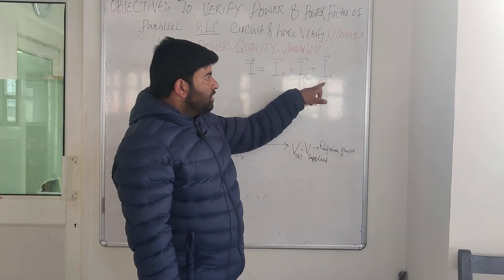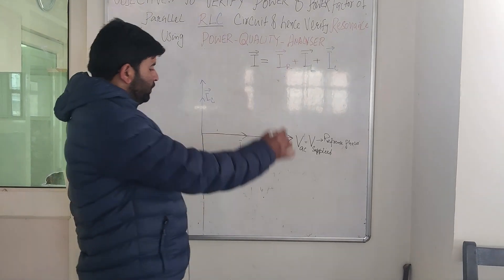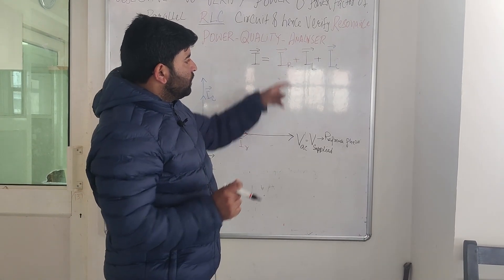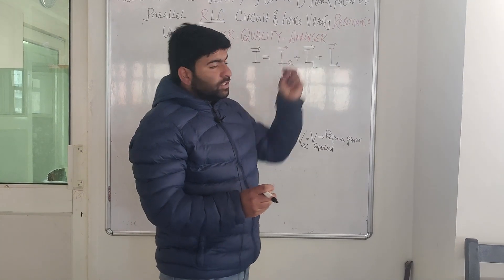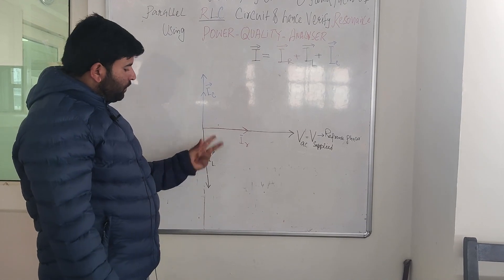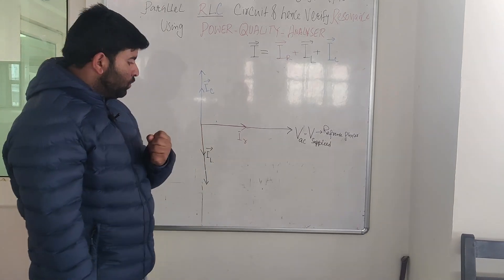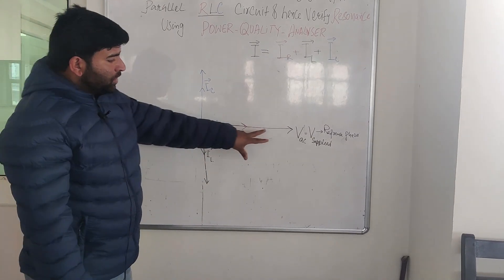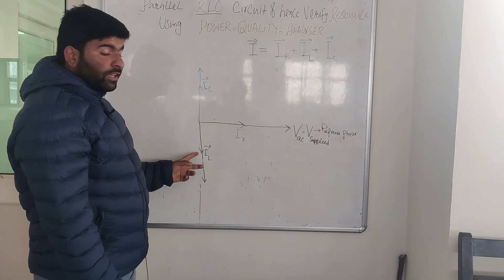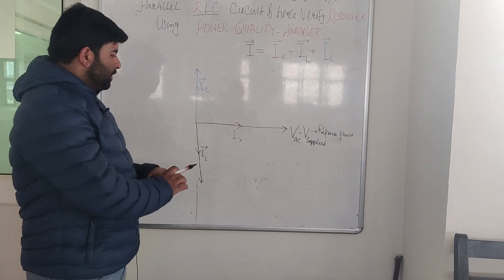The input current I drawn from the source is the phasor sum of IR, IL, and IC — the resistive, inductive, and capacitive currents respectively. We will fix the value of resistance and interchange the values of L and C to observe the resonance effect. We set the supply voltage to about 200 volts. The inductive current will lag the supply voltage by 90 degrees, and the capacitive current will lead it by 90 degrees.